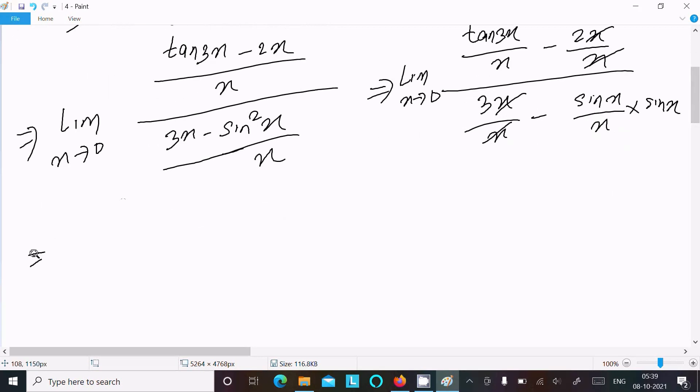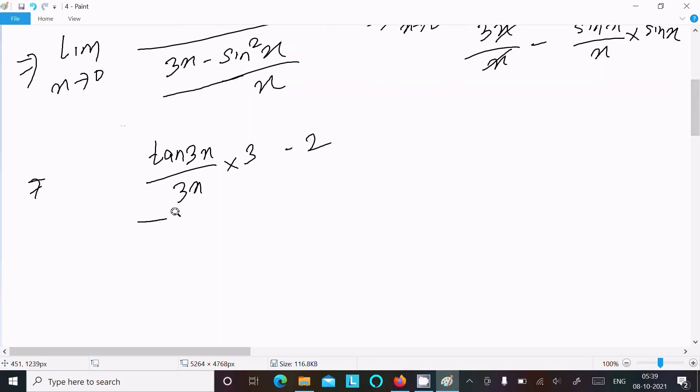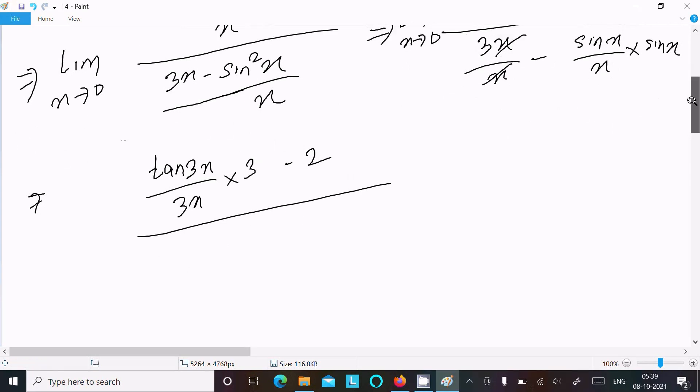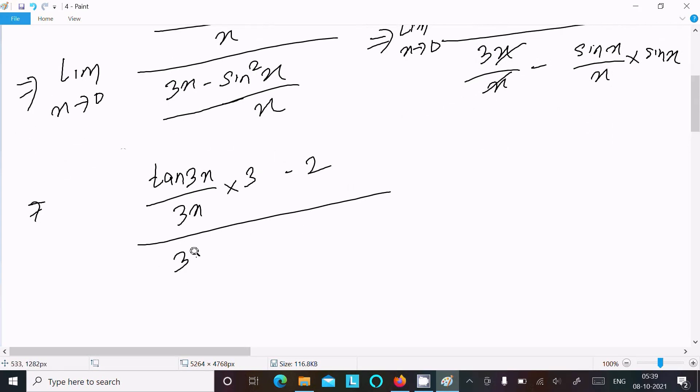After that we can write tan 3x. In the denominator we need 3x, so multiplying here by 3, minus 2 is the constant. After that, this here 3 and sin x by x into x, limit x tends to 0.